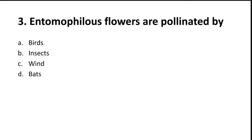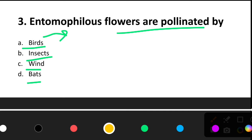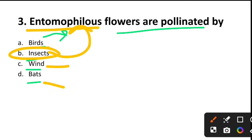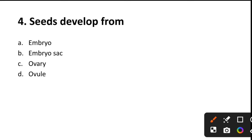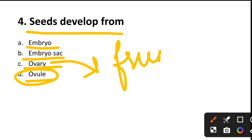Question 3: Entomophilous flowers are pollinated by — birds, insects, wind, or bats? Ornithophily is by birds, entomophily is by insects, anemophily is by wind, chiropterophily is by bats. So entomophilous flowers are pollinated by insects — option B. Question 4: A seed develops from — embryo, embryo sac, ovary, or ovule? A seed develops from the ovule, while the ovary becomes the fruit. Answer: ovule.